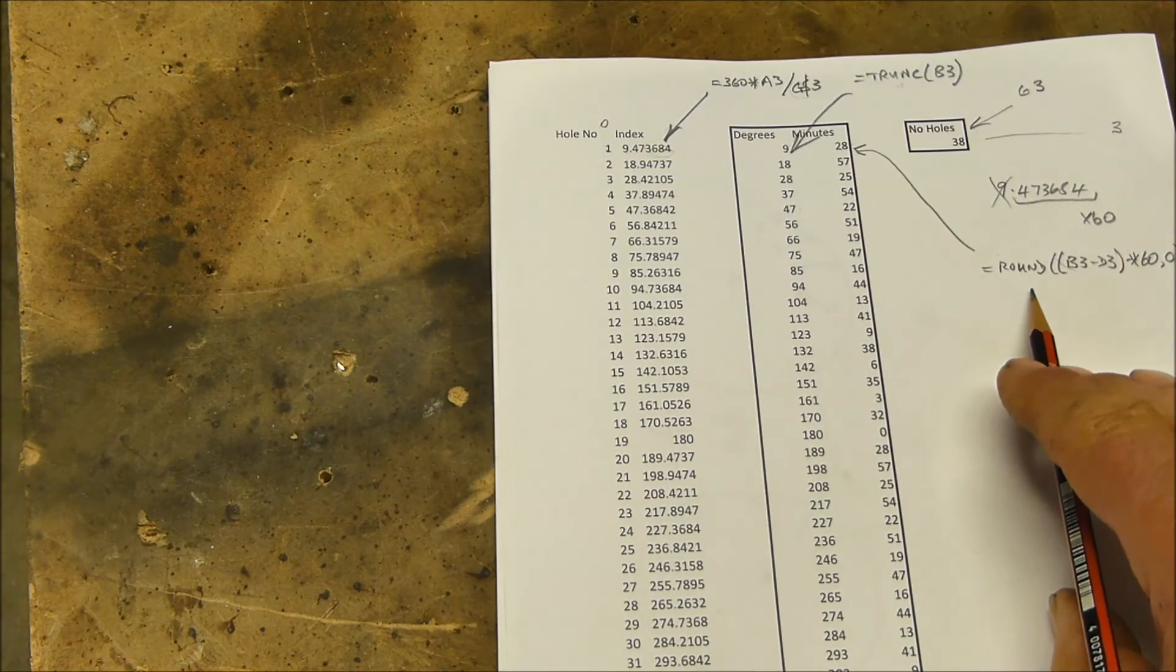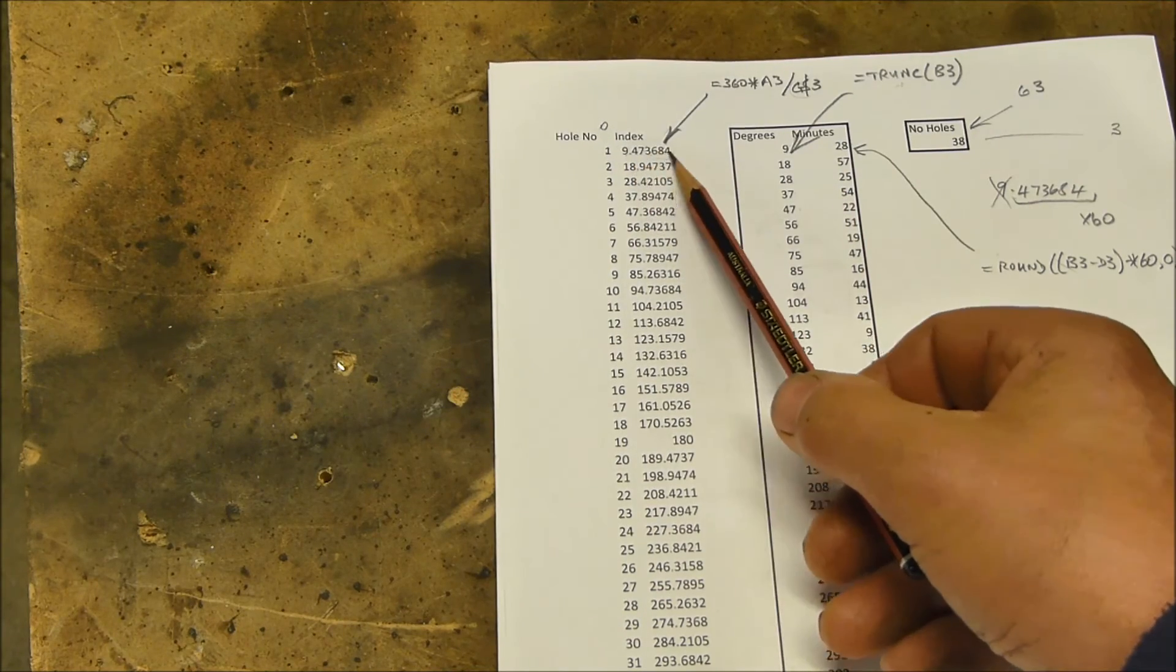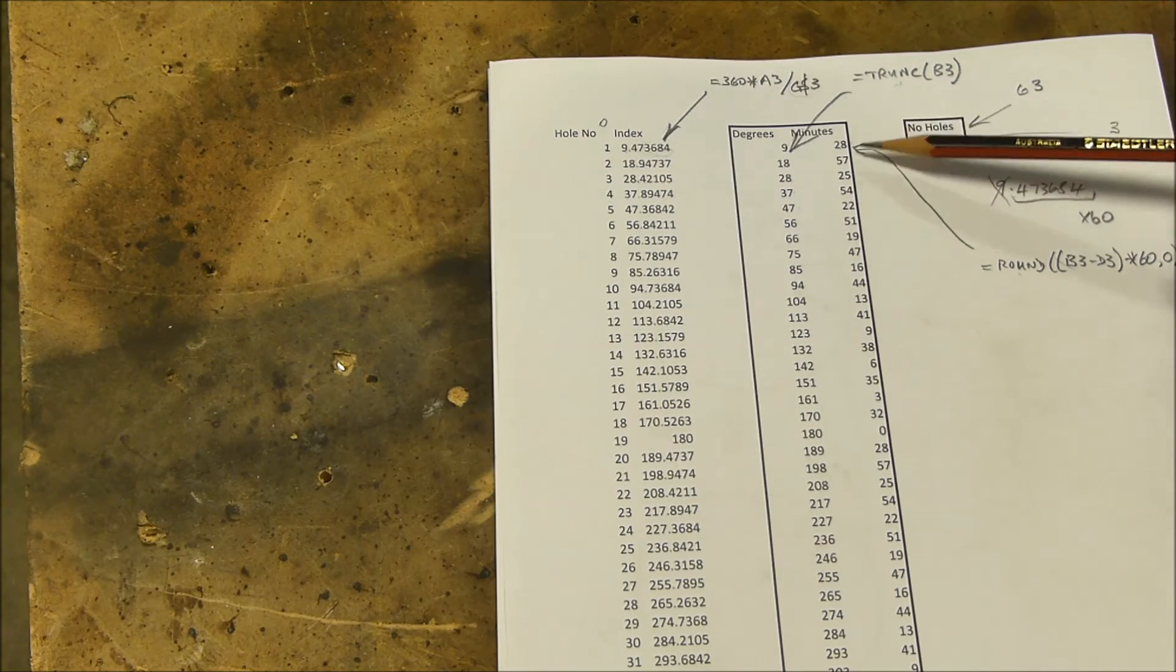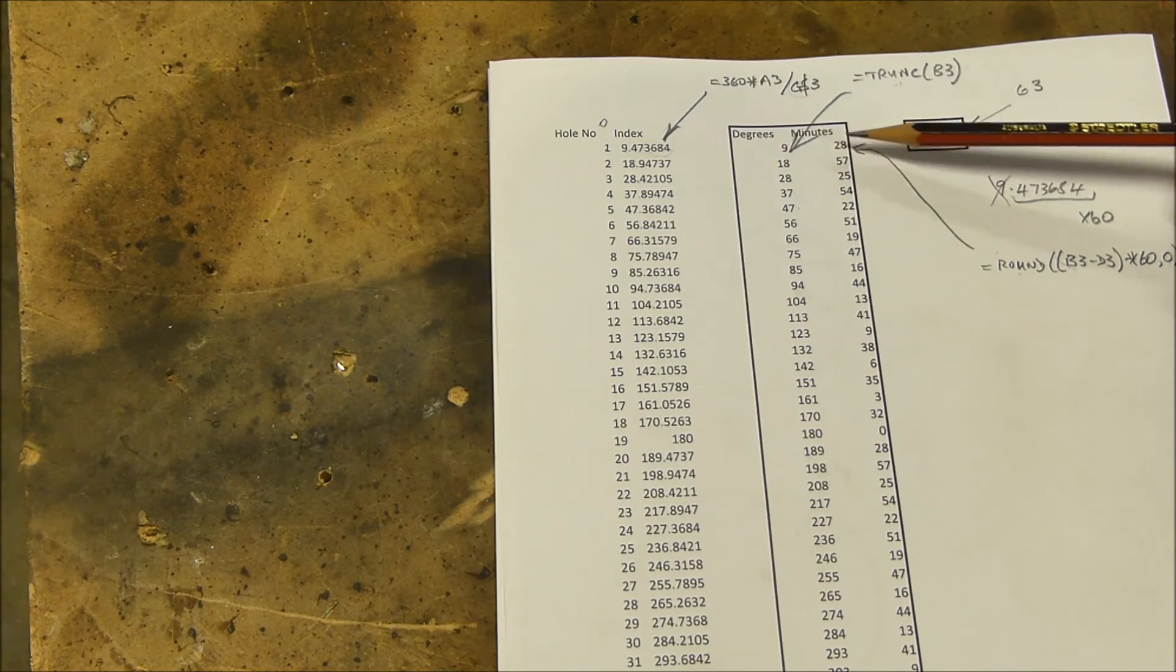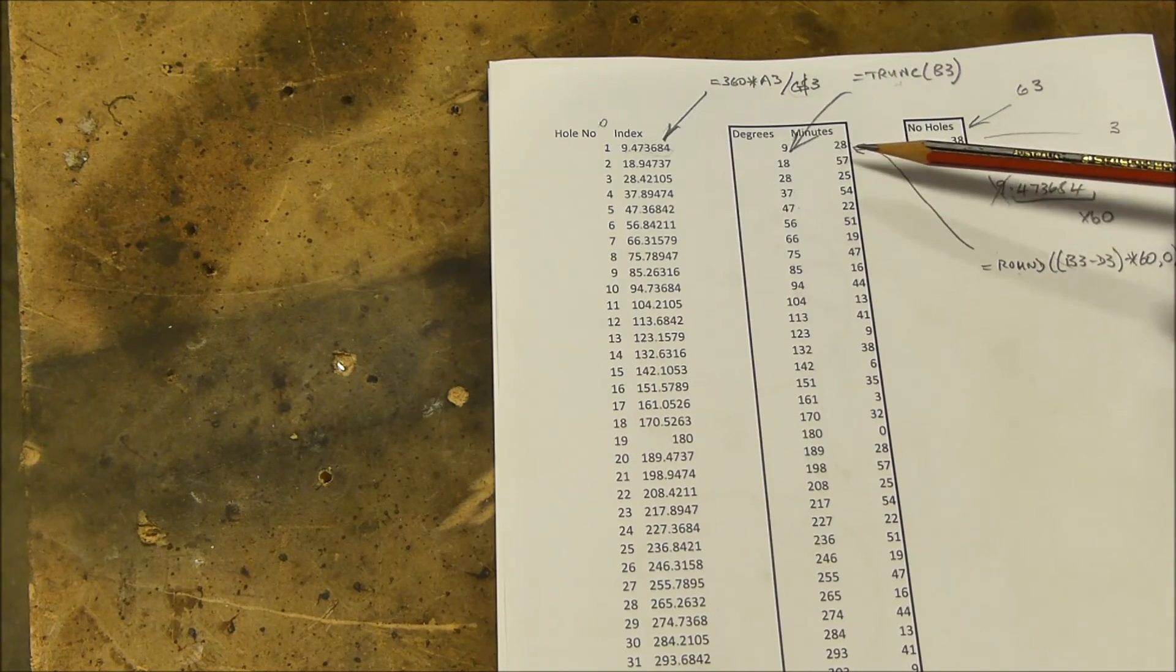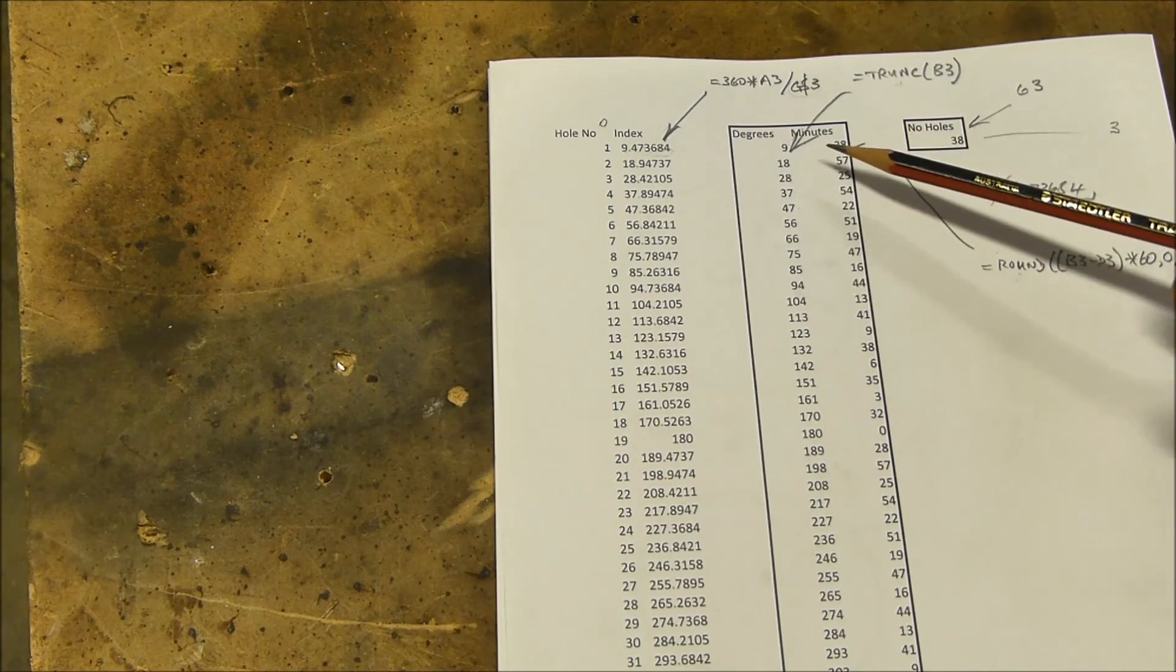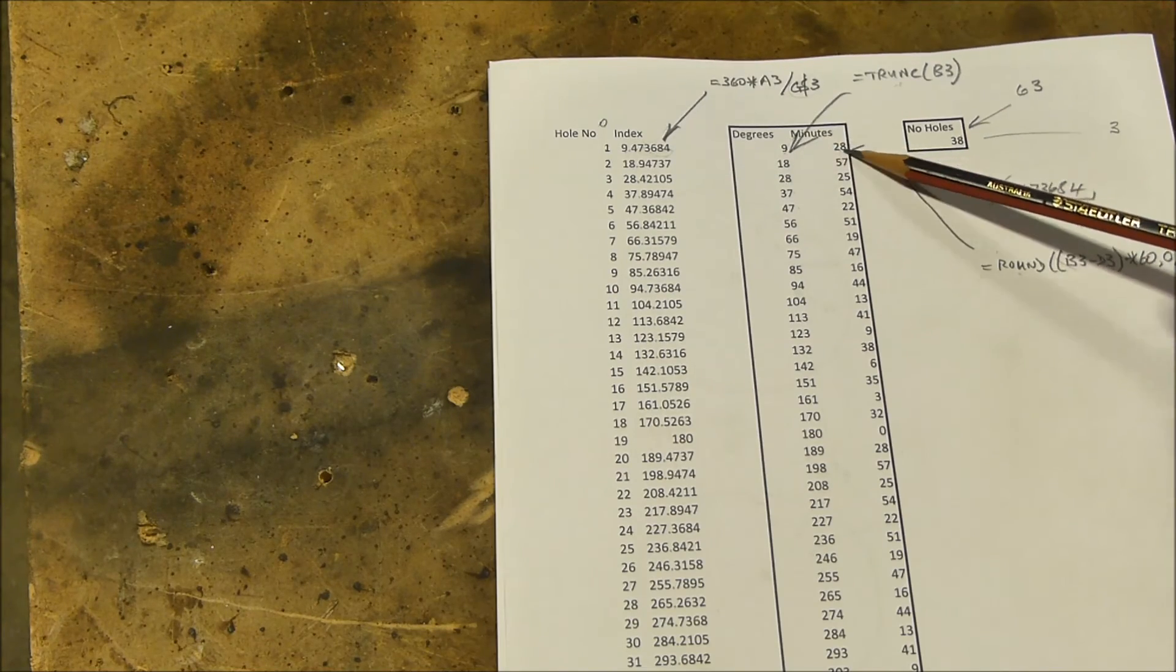And that formula is in that cell. And that will take, so what that formula does is it takes the decimal value, it rounds it to a whole number, and it gives us the answer with no decimal places. So that's 28 minutes of angle. So we then copy that formula into the rest of the cells. Excel does that vanishingly quick for us.